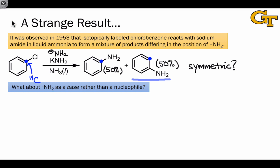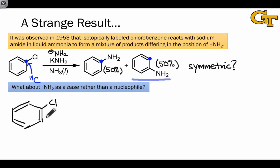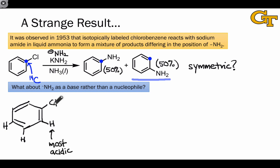How can we think about generating a symmetric intermediate from this starting material? One useful way forward is to think of the NH2- anion as a base rather than a nucleophile, and consider what could happen if NH2- acts as a base and the chlorobenzene starting material acts as an acid. The only hydrogens in this molecule are attached to the carbons of the aromatic ring. Considering the ortho, meta, and para hydrogens and inductive effects, it becomes apparent that the most acidic hydrogen is probably the one closest to the chlorine group. Because chlorine is electronegative, it pulls electron density away from this hydrogen, making it more acidic than the meta and para hydrogens. NH2- is a pretty strong base, and thus, at least partially and reversibly, we can think about NH2- removing this most acidic proton.